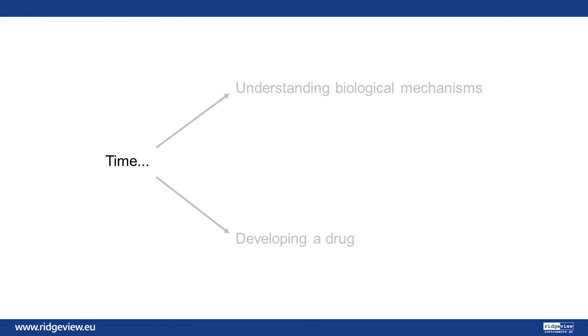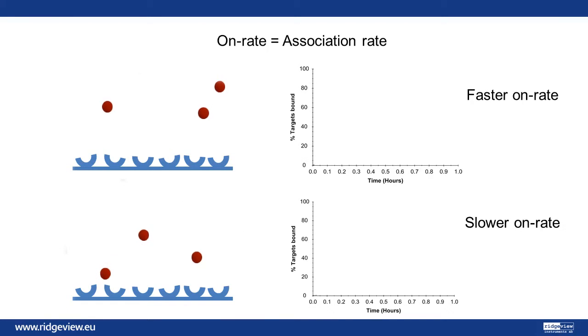The time-related properties of an interaction can be of great value when, for example, studying biological mechanisms or developing a drug. The on-rate, also referred to as the uptake or association rate, tells us how fast complexes are formed. A drug must find and bind its target before it's excreted from the body, so with a rapid excretion rate one should aim for a fast-on interaction.